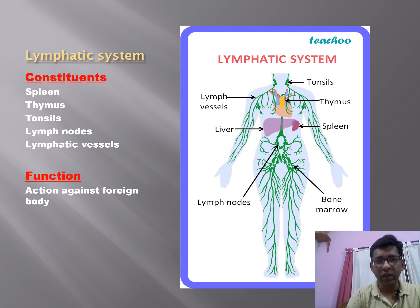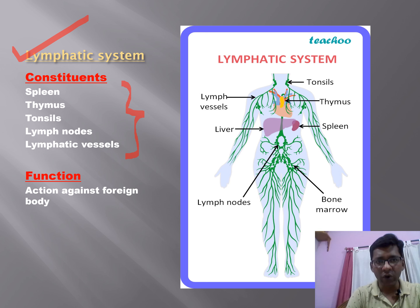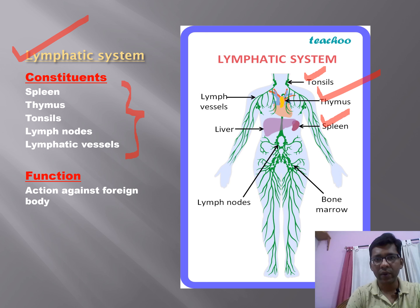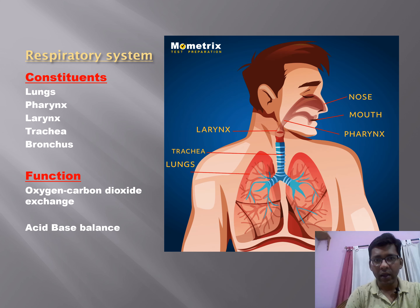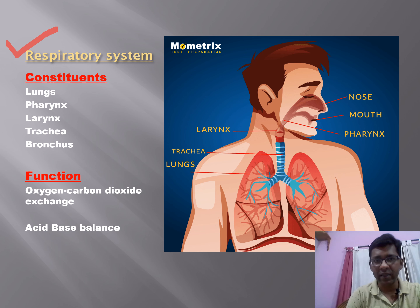The lymphatic system consists of the spleen, thymus, tonsils, lymph nodes, and lymphatic vessels. Tonsils, thymus, and the spleen are the bigger components of the lymphatic system, connected by lymph vessels and lymph nodes. Their function is action against foreign bodies — essentially immune defense.